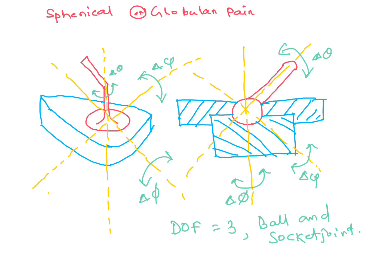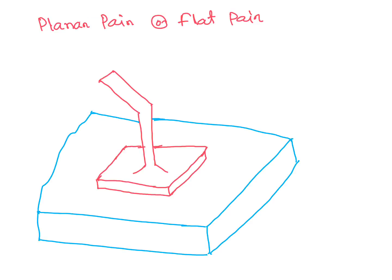A planar or flat pair has three degrees of freedom: one rotational motion (delta-theta) and two translational motions (delta-x and delta-y).